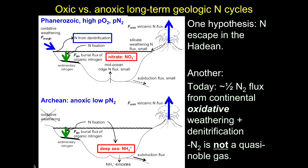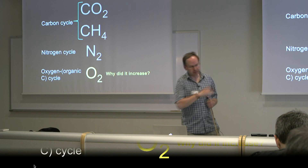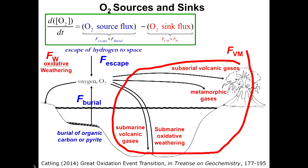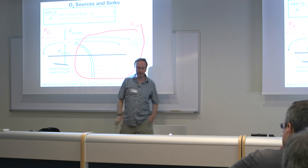Returning to oxygen: like any atmospheric gas, its level is set by a difference between sources and sinks, expressible as a differential equation. How does that oxygen cycle work? The balance of sources and sinks — organic burial supplying oxygen, and weathering and respiration consuming it — governs the long-term evolution of atmospheric oxygen.